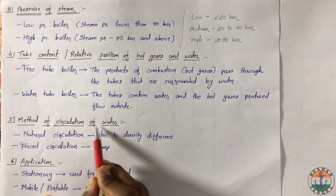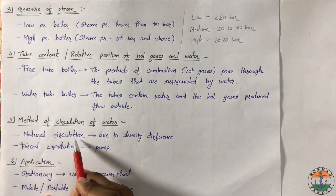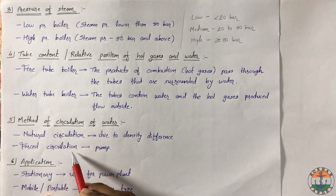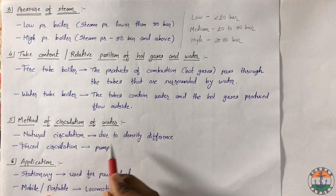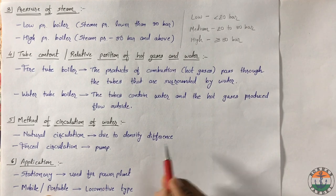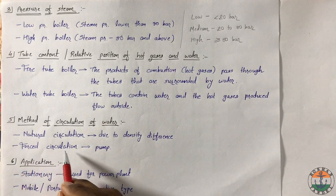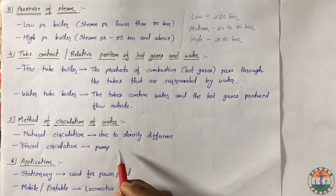Based on the method of circulation of water, boilers are classified into natural circulation boiler and forced circulation boiler. In natural circulation, water circulation takes place due to density difference. In forced circulation, pump is used to circulate the water under pressure.